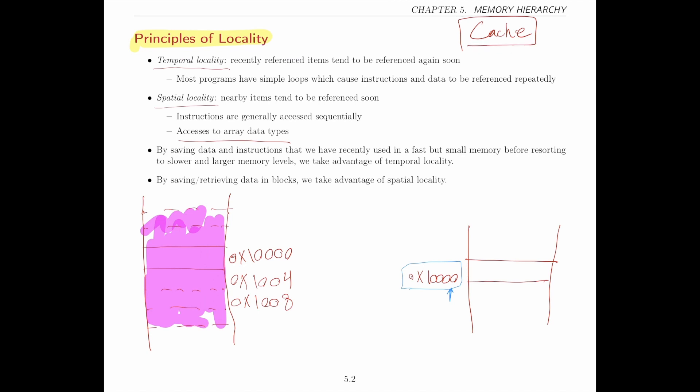To benefit from spatial locality, we are going to move things into or out of the cache in blocks. Instead of looking at one eight-byte double word, we are going to look at a block of memory that might, for example, have four double words in it. This is called a block. By retrieving data from memory and saving it into cache in consecutive blocks, we benefit from spatial locality.